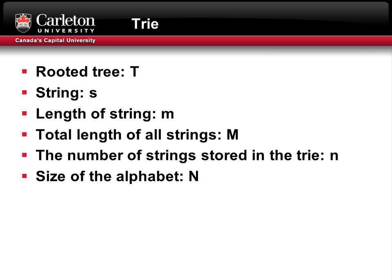To begin my discussion on tries, I'm going to define a few variables first. T is the rooted tree. S is the string. Lowercase m is the length of the string. Uppercase M is the total length of all strings in the trie. Lowercase n is the number of strings stored in the trie. And uppercase N is the size of the alphabet.